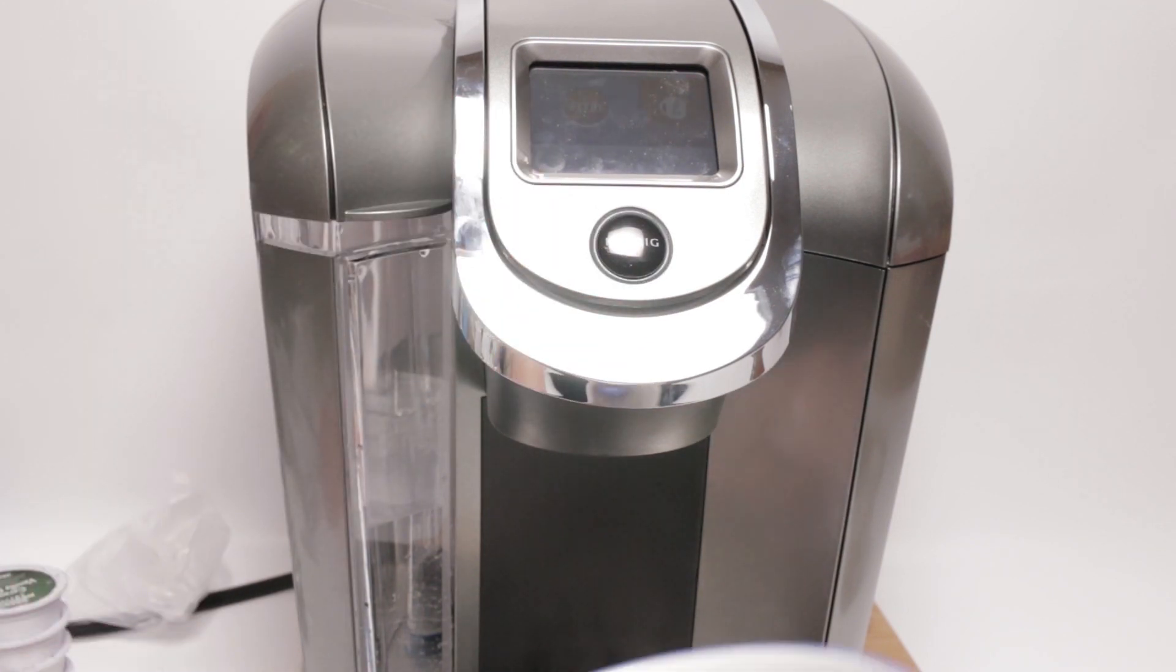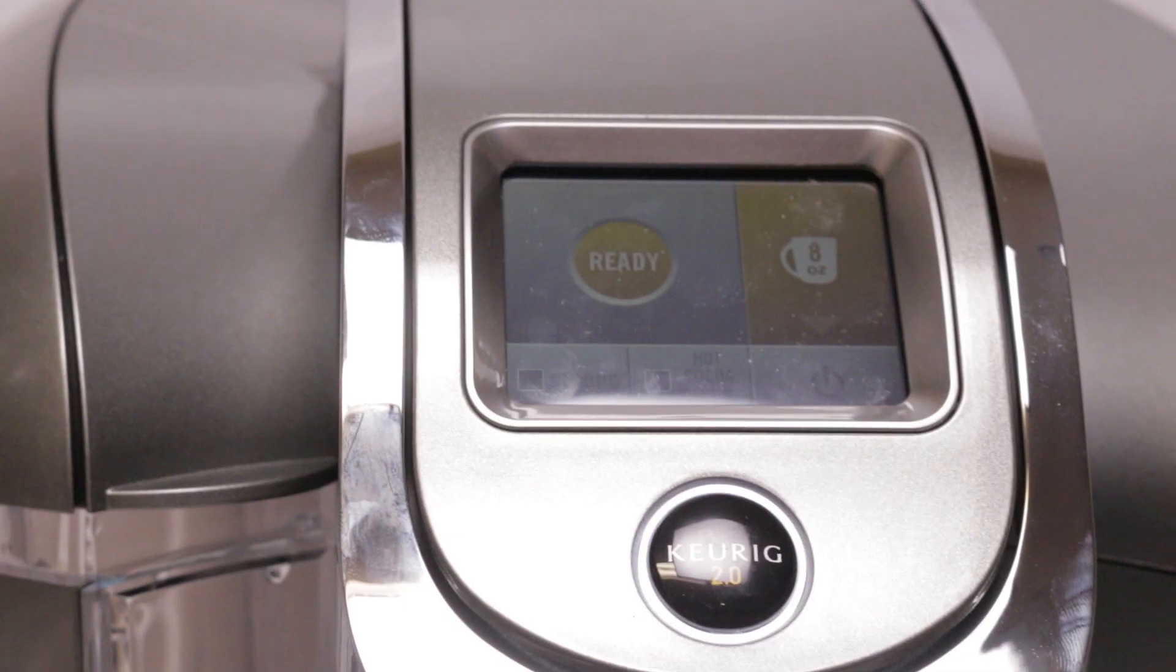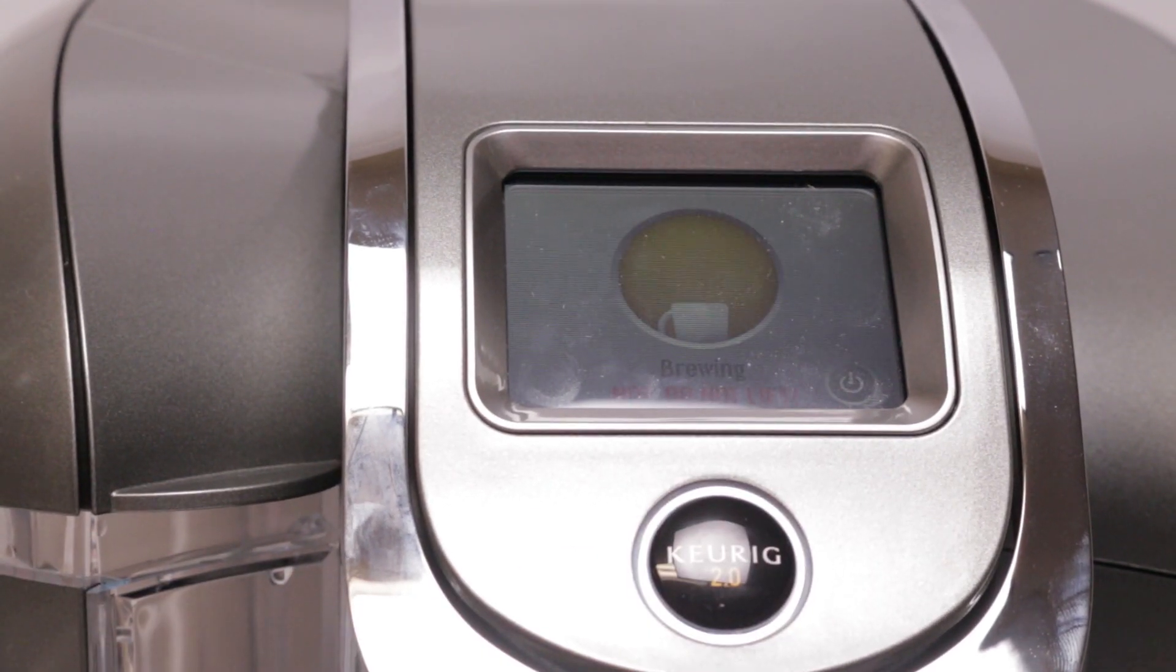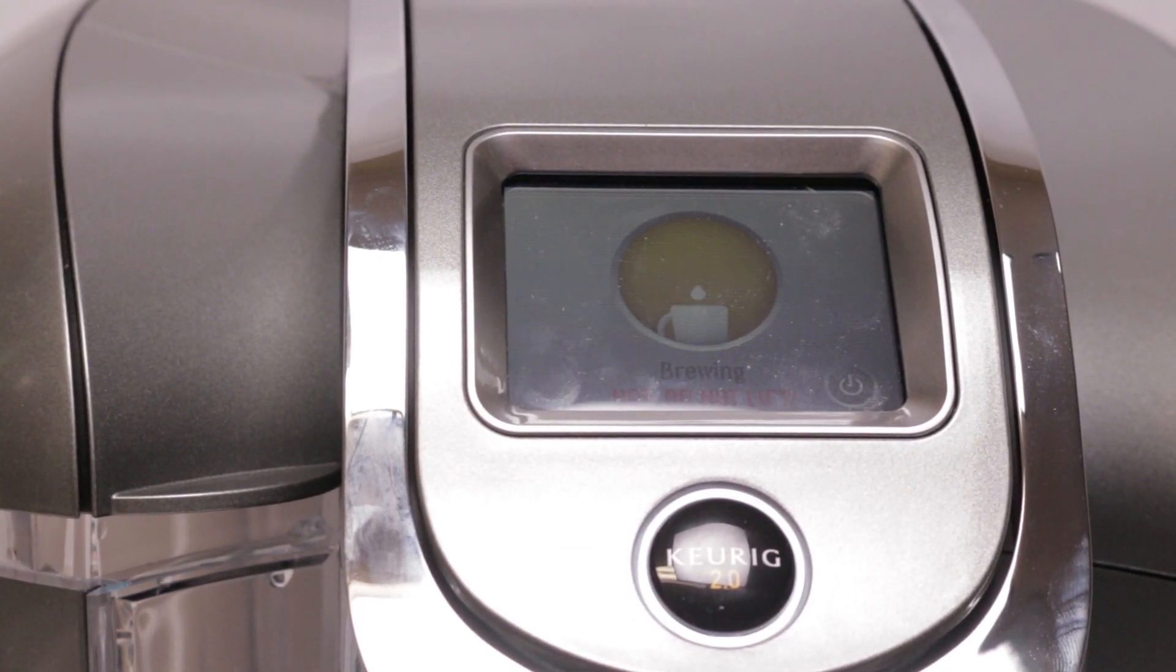So just load it up into the machine. And the 2.0 machine instantly recognizes that it's a My K-Cup. And then you can hit start.